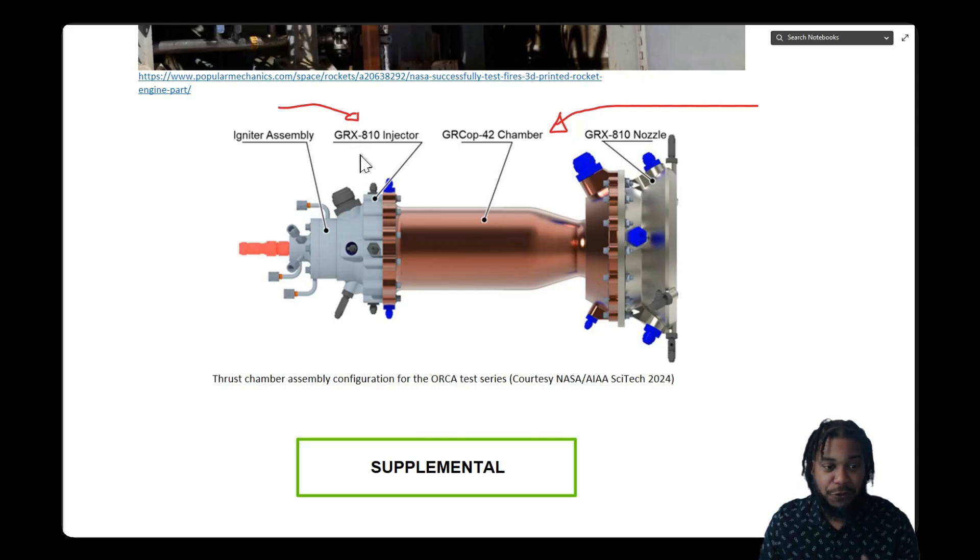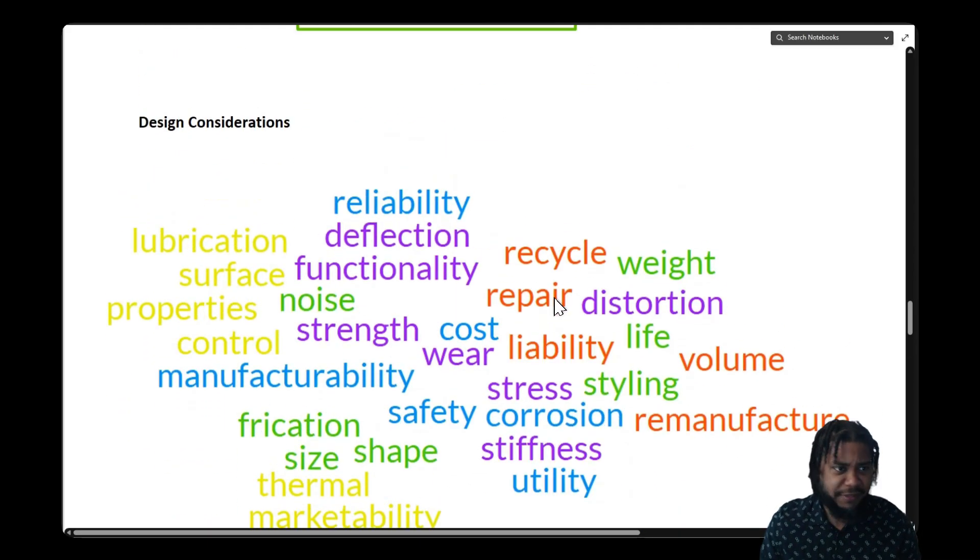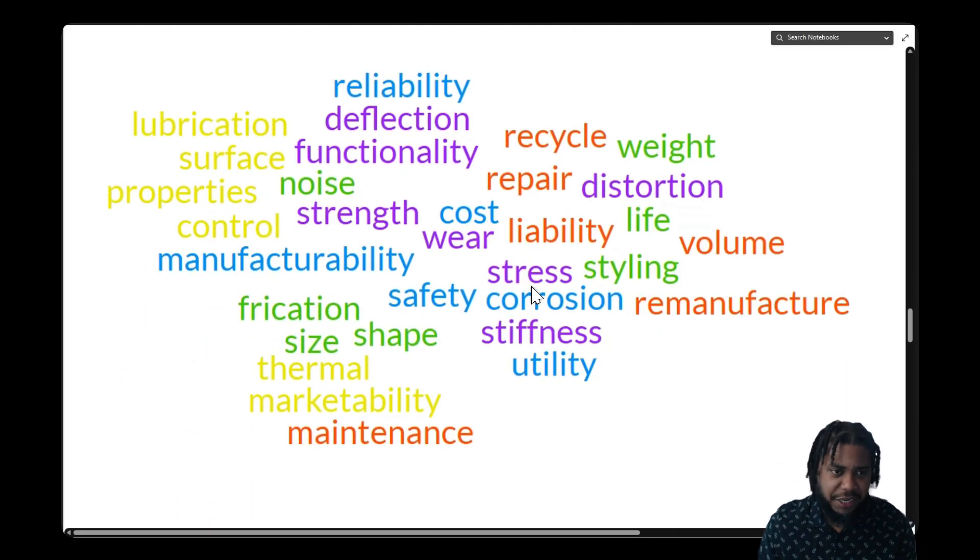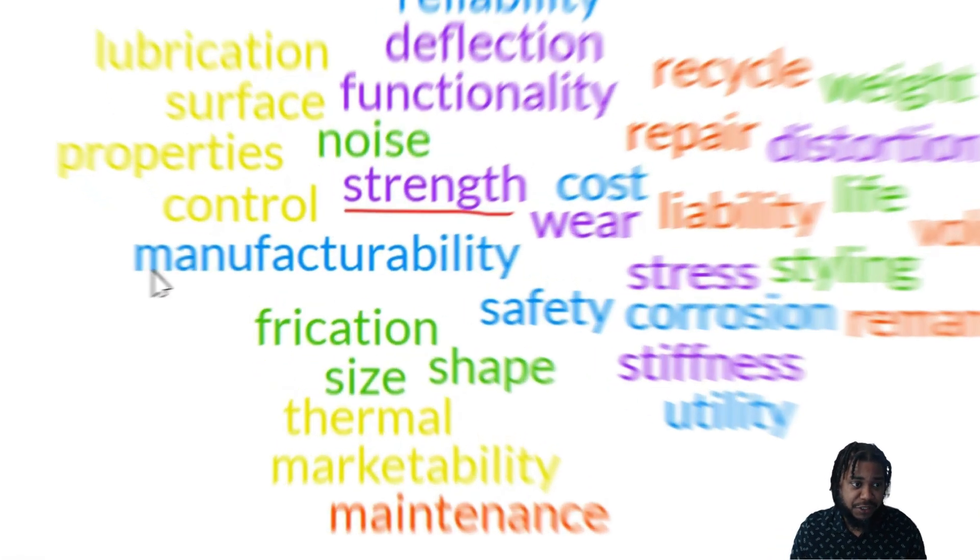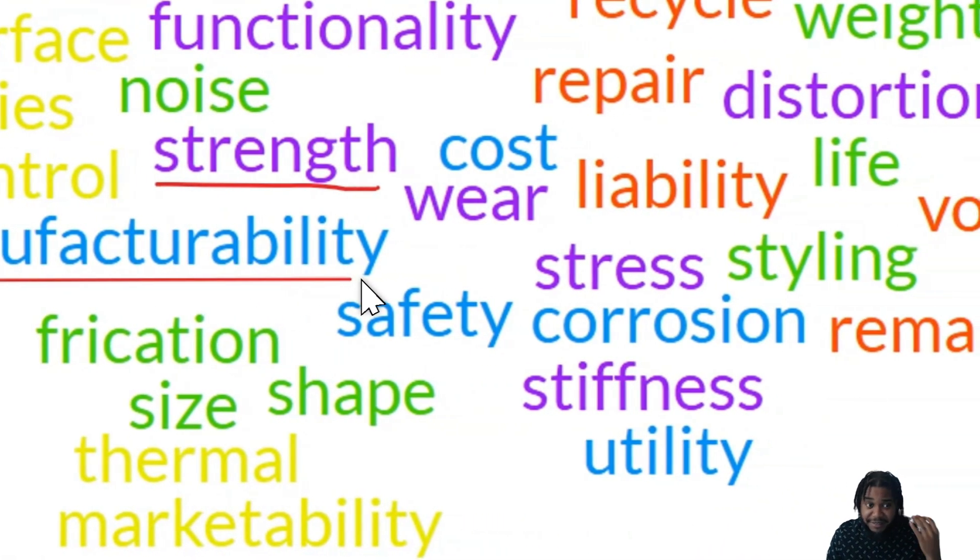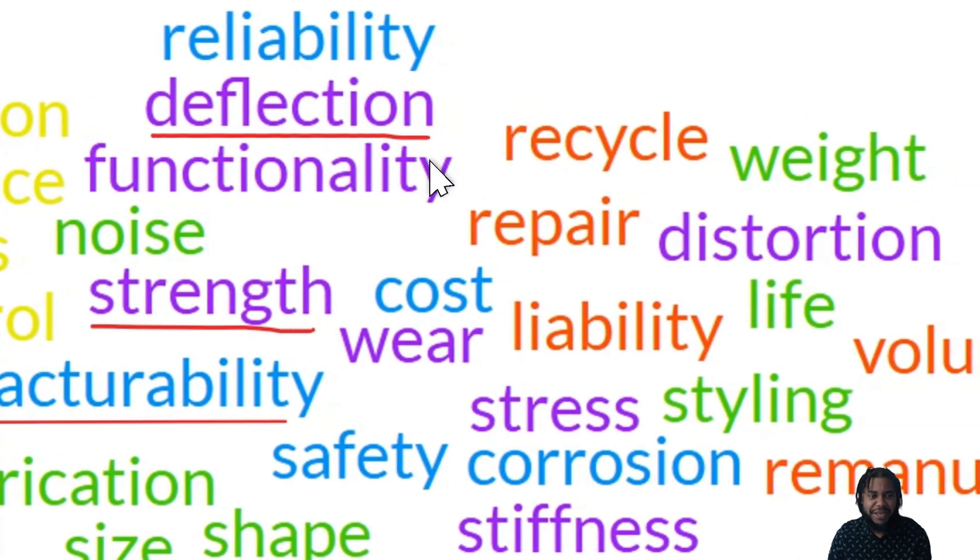In design there are many variables that we have to consider. One of the most common is simply the strength of a component. If we apply loads to it, if we load it up, will it fail or is it strong enough to survive? But there are other variables that are also important, things such as manufacturability. Is it easy to machine and manufacture? Will our component deflect or bend too much? Is it stiff enough?